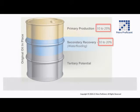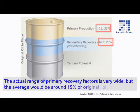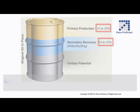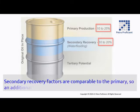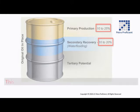The actual range of primary recovery factors is very wide, but the average would be around 15% of original oil in place. Secondary recovery factors are comparable to the primary, so an additional 15% of original oil is recovered by water flooding. This leaves 70% of original oil in place unrecovered.